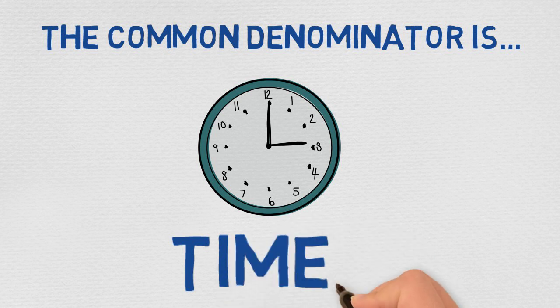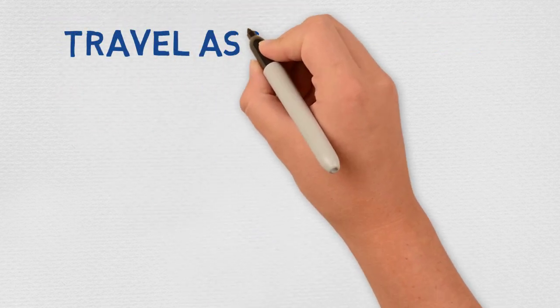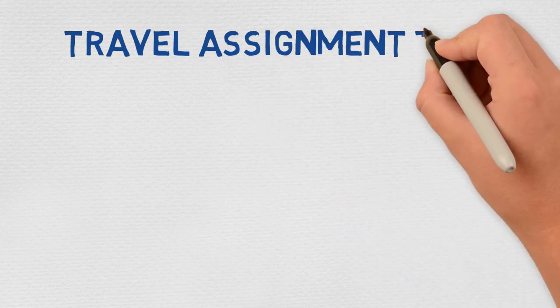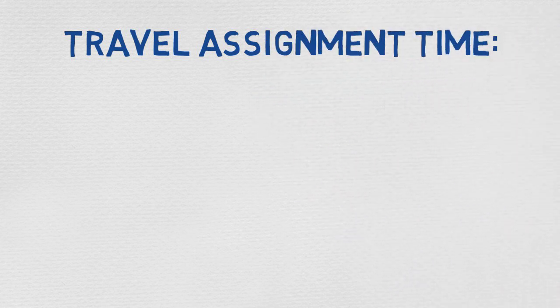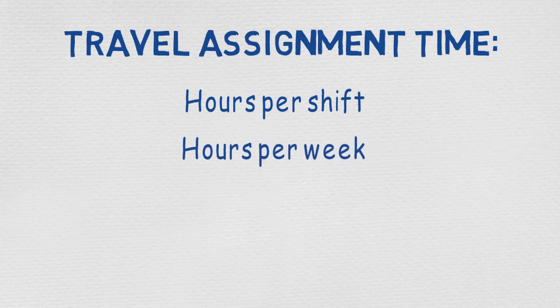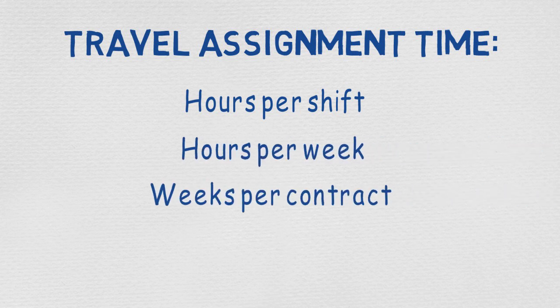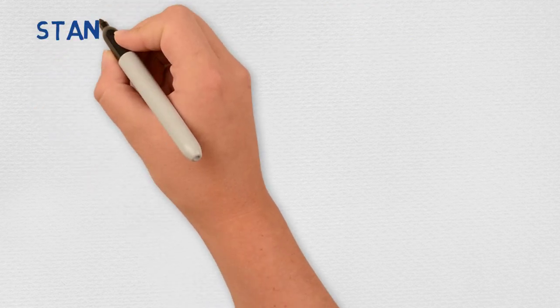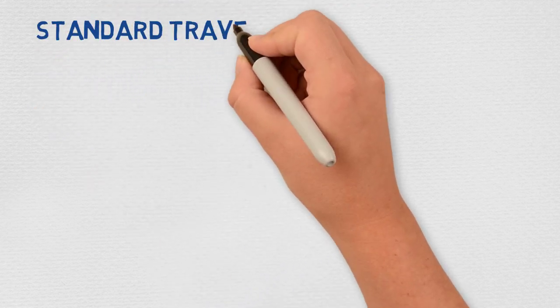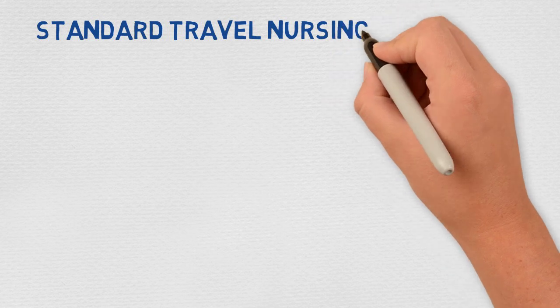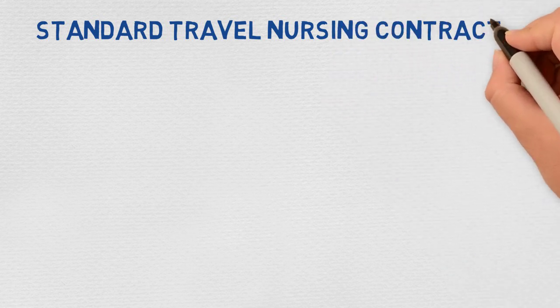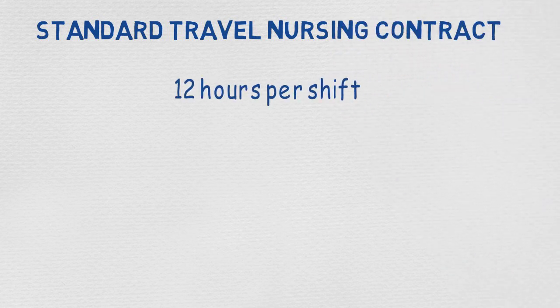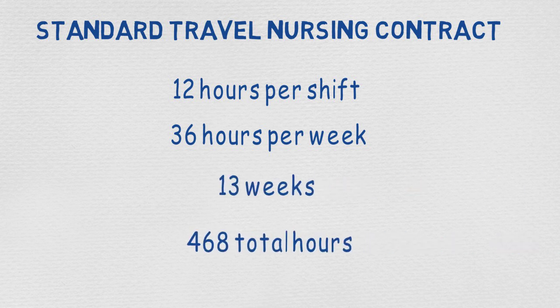We want to break everything down to an hourly value. To do this we're going to start with a travel assignment's time variables. These include the hours per shift, hours per week, weeks in the contract, and the total number of hours in the contract. For example, the standard travel nursing contract is for 12 hours per shift, 36 hours per week, 13 weeks, and 468 hours.